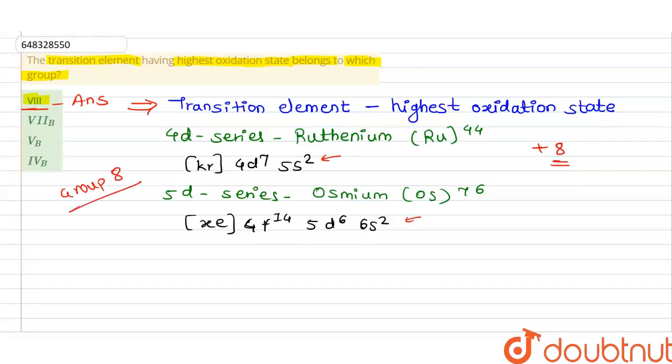So the transition elements ruthenium and osmium, both belonging to Group 8, have the highest oxidation state of +8. Thank you.